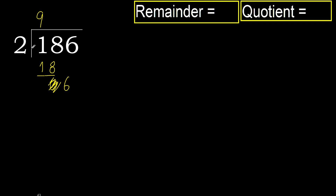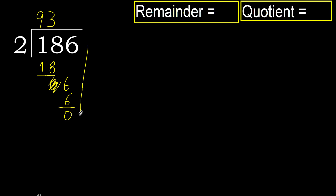2 multiplied by 4 is 8 — 8 is greater, so multiply by 3 instead. 6 is not greater. Subtract — remainder 0. There is no next number, therefore finish.